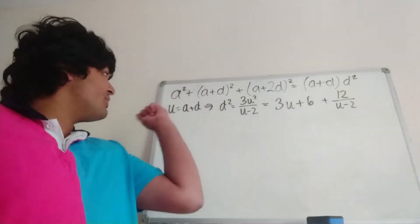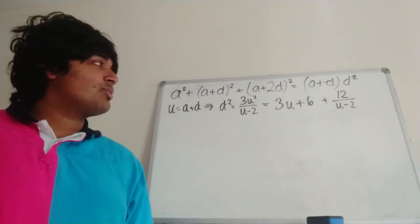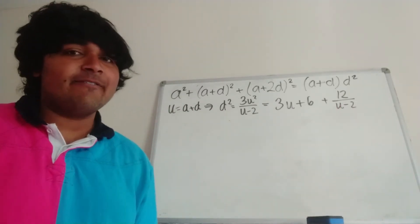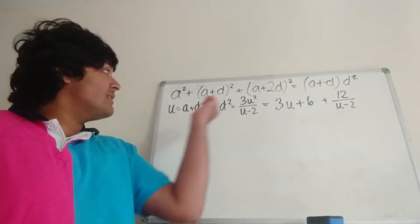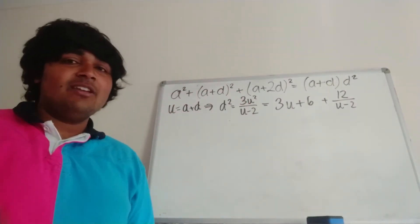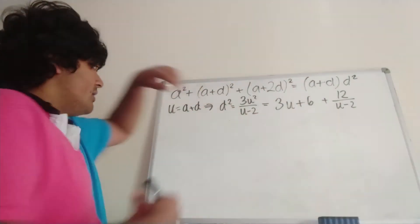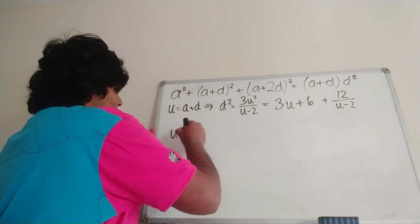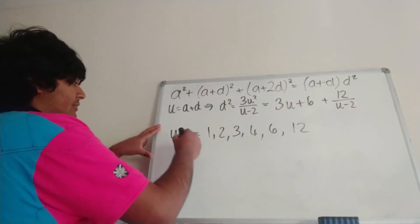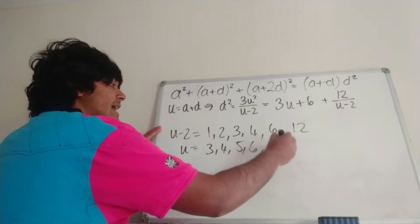We showed that with the substitution u equals a plus d, d squared equals 3u squared over (u minus 2), which is 3u plus 6 plus 12 over (u minus 2), and u minus 2 must be a factor of 12. Also, since d squared is not negative and 3u squared is not negative, u minus 2 must be strictly positive. So u minus 2 is a positive factor of 12, meaning u minus 2 equals 1, 2, 3, 4, 6, or 12 — equivalently, u equals 3, 4, 5, 6, 8, or 14.